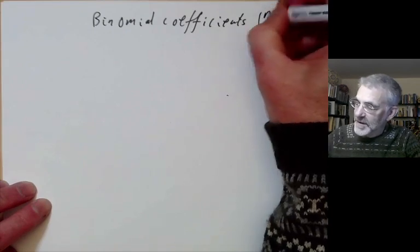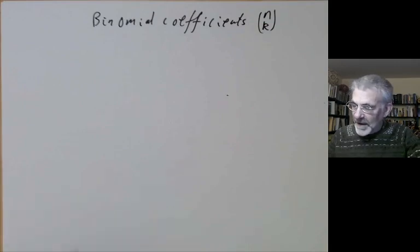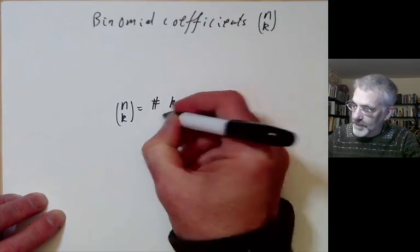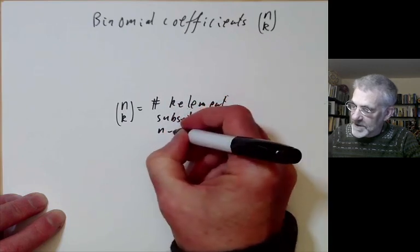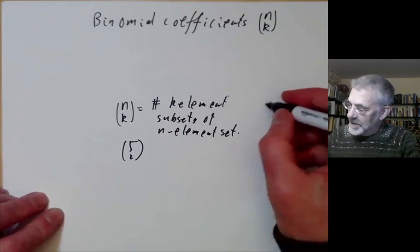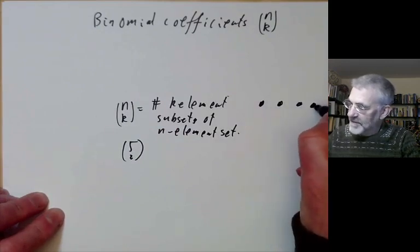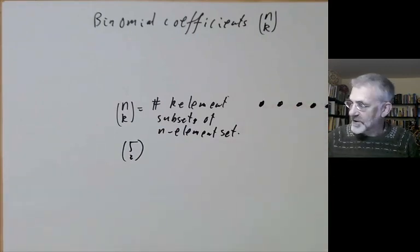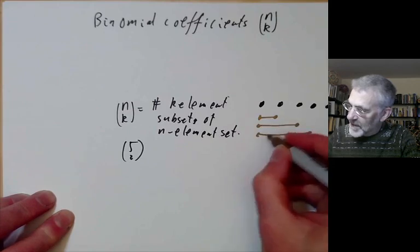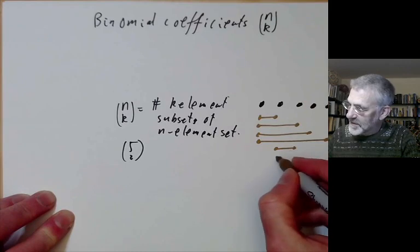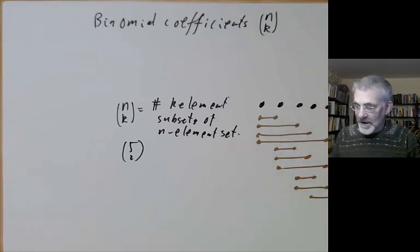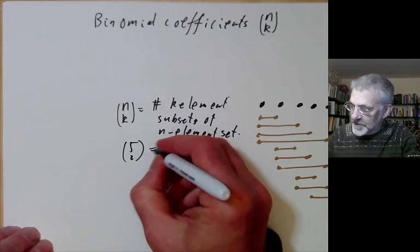Binomial coefficients are denoted by n choose k and pronounced 'n choose k.' The first definition is that n choose k is the number of k-element subsets of an n-element set. For example, let's work out 5 choose 2. We take 5 elements and pick out 2. Listing all pairs: (1,2), (1,3), (1,4), (1,5), (2,3), (2,4), (2,5), (3,4), (3,5), (4,5). Counting these, there are exactly 10 ways, so 5 choose 2 equals 10.